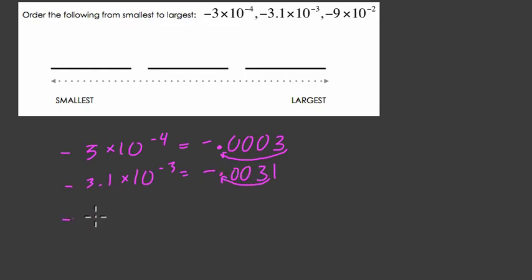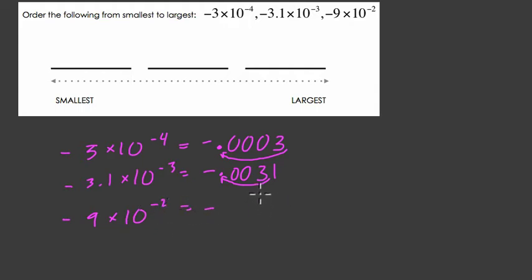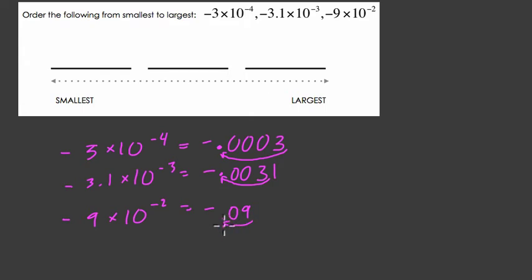Finally, negative 9 times 10 to the negative 2nd. We've got a negative number, starting at 9, and we divide twice — over twice. We get negative 0.09.